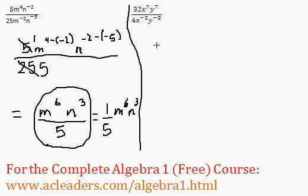Here we have 32 x to the 7 y to the 7, all over 4 x to the negative 2 y to the negative 3.